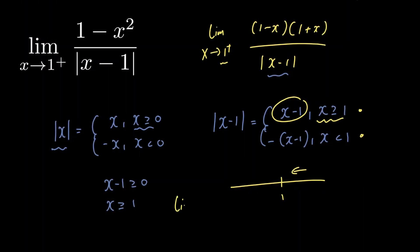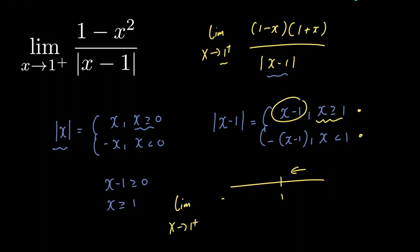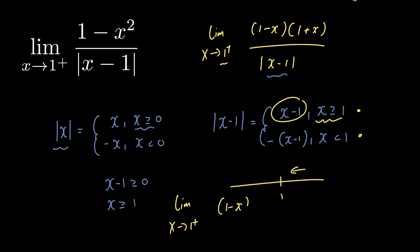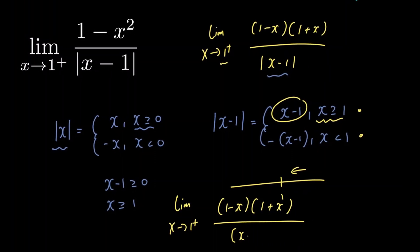We have the limit as x approaches 1 from the right of 1 minus x multiplied by 1 plus x divided by x minus 1.